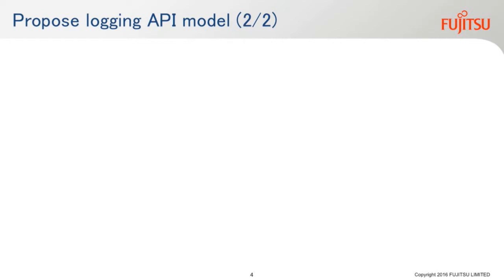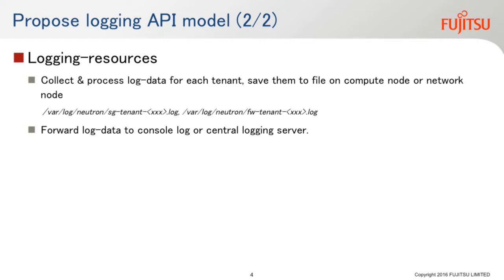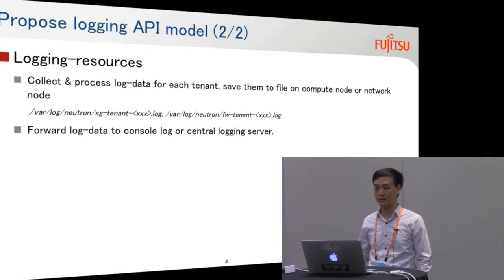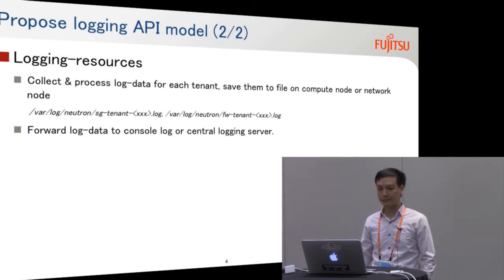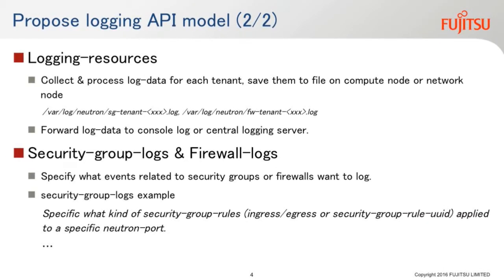For the logging resource API, the operator or tenant can collect and process the log data and save them to a file on the compute node or network node with some enhancements. The logging resource can also help forward the log data to a console log or central logging server, depending on user demand. For the security group log and firewall log API, it will specify what events related to the security group or firewall you want to log. For example, if you want to specify the direction — ingress — or a security group rule UUID you want to get logged, you just insert this into the security group log API.